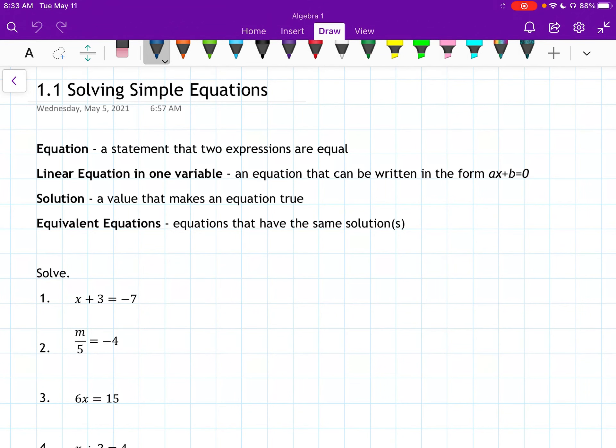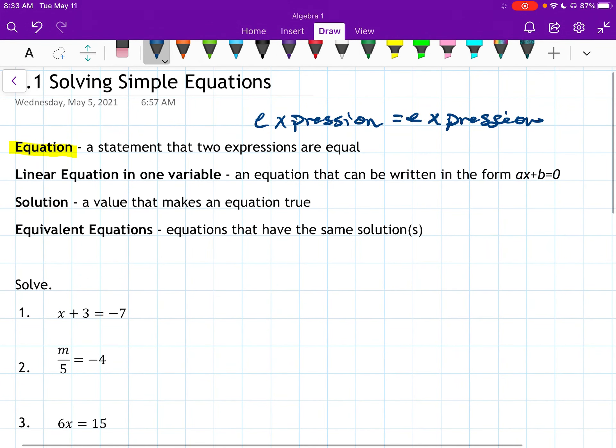Alright, 1.1, solving simple equations. So starting off, we have some definitions. We have an equation. An equation is a statement that two expressions are equal. So it's something like expression equals an expression. The whole thing is an equation, but each piece of it is an expression. An expression is just like a string of numbers or a string of variables and numbers. And then the equation is where you have the equal sign, and it equals something.